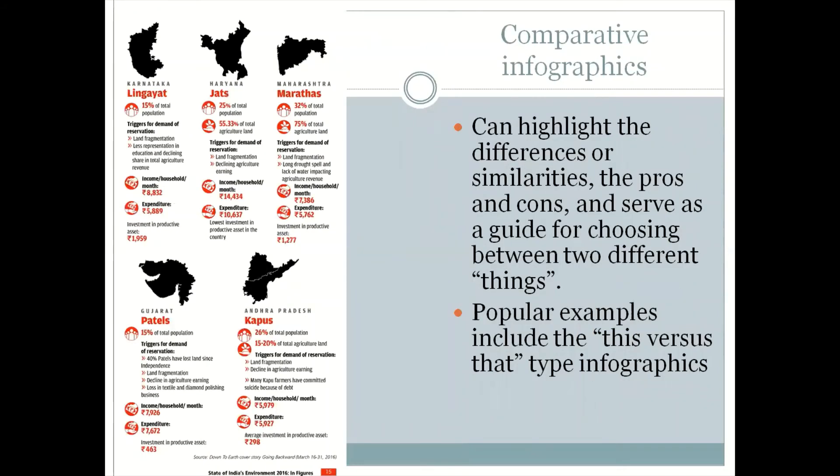This is a comparative infographic. This is a very interesting kind of visualization that we were able to come up with. In the original format, when it was published in the magazine, the idea was that it was part of the cover story. Basically, this was the time when a lot of the backward castes in India who were traditionally well-to-do because they were landed people, they never wanted to be a part of the reservation system, but they started demanding for reservations. This was again in 2016.